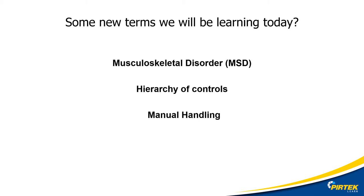Let's introduce some new terms for today's lecture. Musculoskeletal Disorder, MSD — this is a common term used for repetitive workplace injuries. Hierarchy of controls — this is a method of systematically analysing and dealing with hazards in the workplace. Manual handling — moving and lifting things.